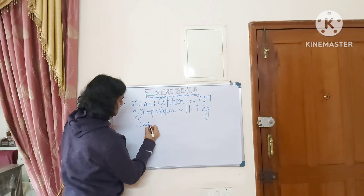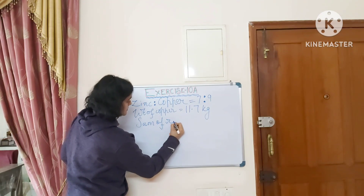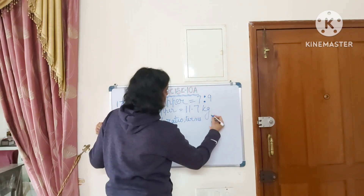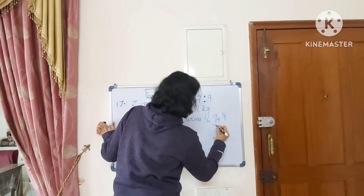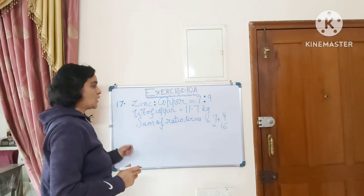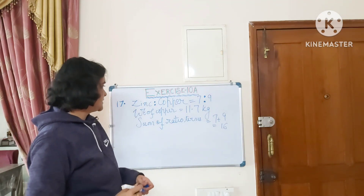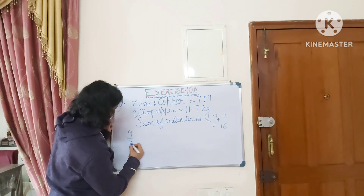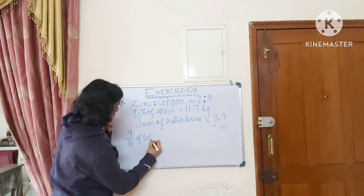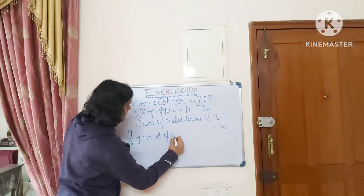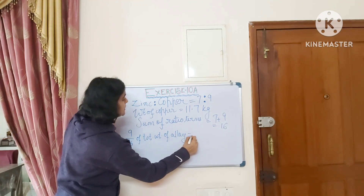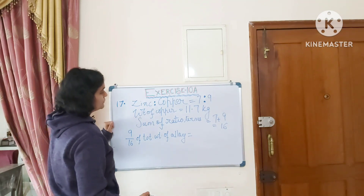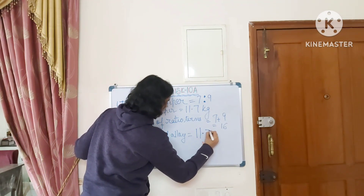In this alloy, the ratio of zinc to copper is 7 to 9, and the weight of copper is 11.7 kg. We need to find the weight of zinc. First, the sum of ratio terms is 7 plus 9 equals 16. So 9 out of 16 parts represents the copper weight, and 9 by 16 of total weight equals 11.7 kg.